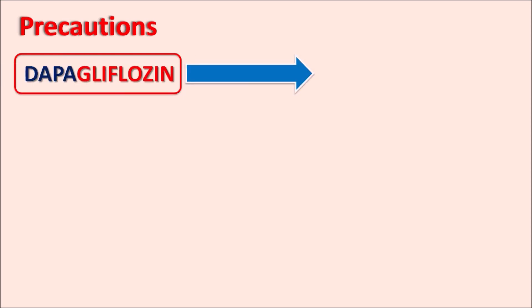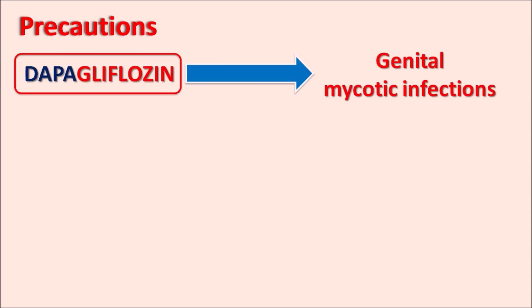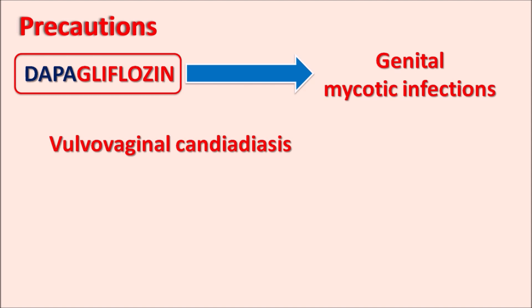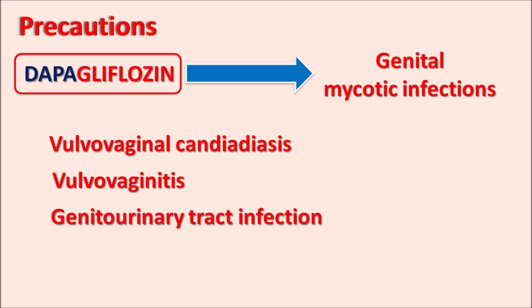Dapagliflozin can also increase genital mycotic infections, both in women and men. In women, it can produce vulvovaginal candidiasis and vulvovaginitis. Genitourinary tract infections can occur in both males and females. Since this drug increases urinary excretion of glucose, and glucose acts as a good source for fungal growth, genital mycotic infections are possible with SGLT2 inhibitors like Dapagliflozin.